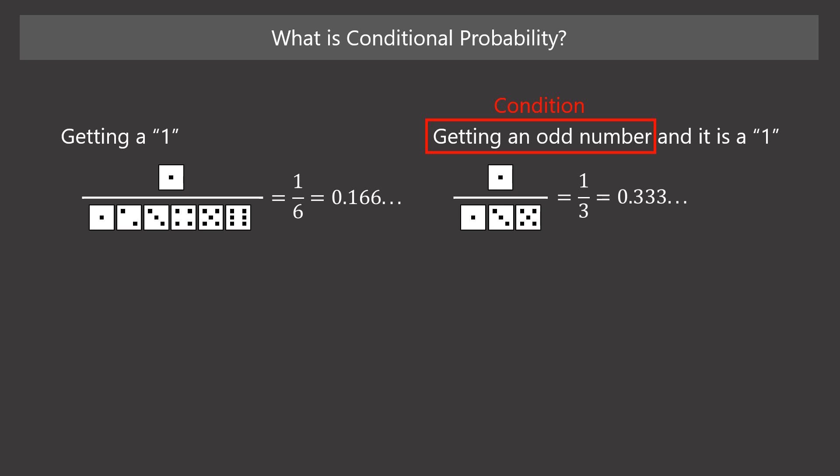In this example, we need to consider additional information for calculating the probability. The additional information is that the pip is an odd number. Here, the additional information works as a condition that limits the possible values of the outcome. It is an example of conditional probability.